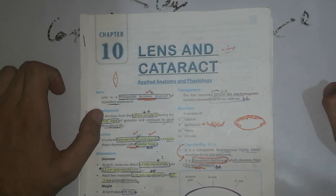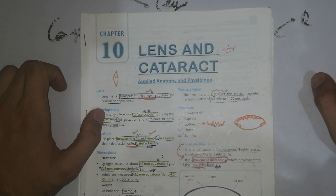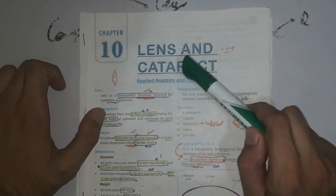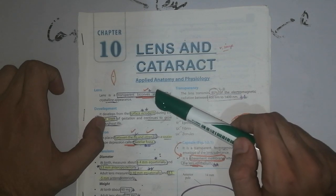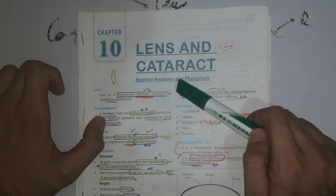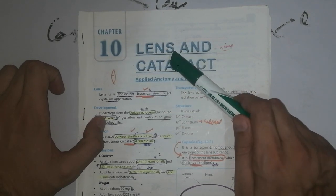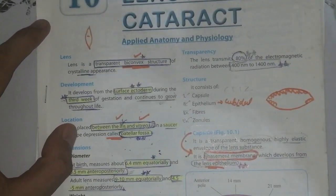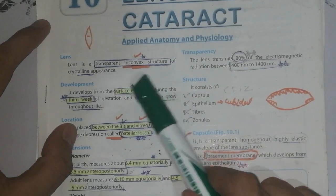Assalamualaikum friends, again welcome to my YouTube channel. Today our topic of discussion is lens and cataract. Basically this is the applied anatomy and physiology of eye lectures. What is lens? Lens is basically a transparent bi-concave structure of crystalline appearance.